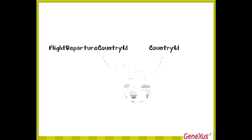Let's now open the flight transaction again. We can see that the attributes FlightDepartureCountryId and FlightDepartureCityId now have the symbol of the small arrow pointing upwards, indicating that they will be considered as foreign keys, and there is also the S-letter symbol indicating that these attributes are defined as subtypes. Going over the table diagram again, the relations now show that GeneXus considers these attributes as subtypes that are identifiers of Country and City in Flight, and GeneXus has found the relation between Flight, CountryCity, and Country.